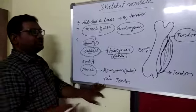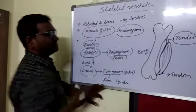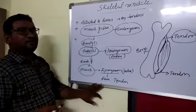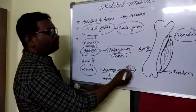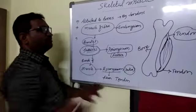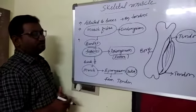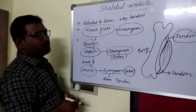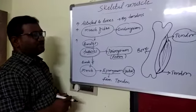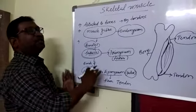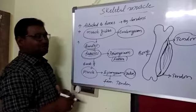This muscle is covered by a connective tissue sheet called epimysium. Epimysium is the outermost layer of the muscle and it covers the total skeletal muscle.